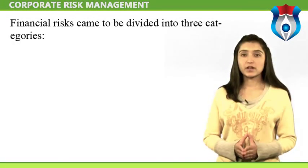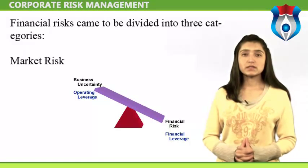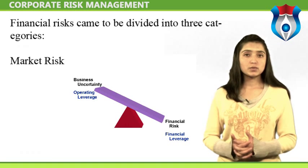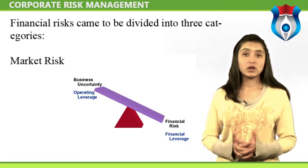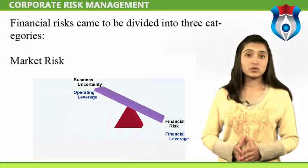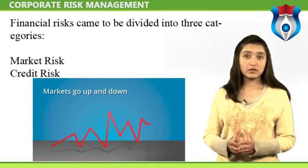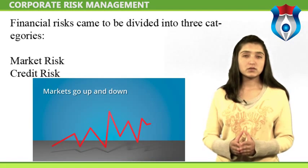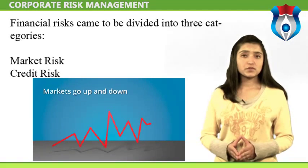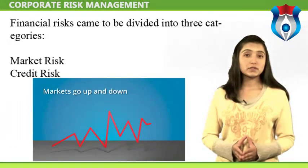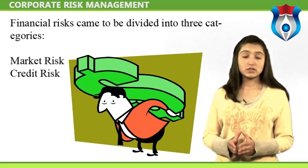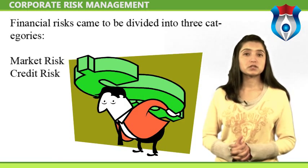Market Risk is exposure to uncertain market prices — it can only exist where assets or liabilities can be marked to market. Risk related to assets or liabilities that cannot be marked to market, such as a factory or an entire business line, is called business risk. Credit Risk is risk due to uncertainty in a counterparty's — also called an obligor's — ability to meet its financial obligations. Because there are many types of counterparties, from individuals to sovereign governments, and many different types of obligations, credit risk takes many forms and institutions manage it in different ways.